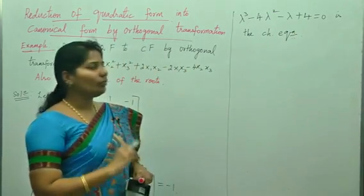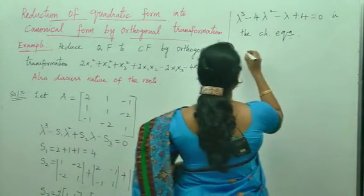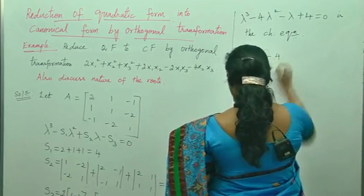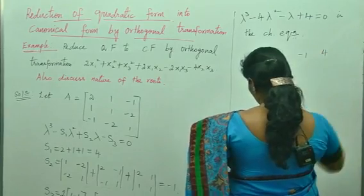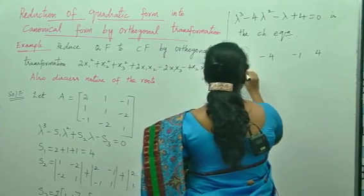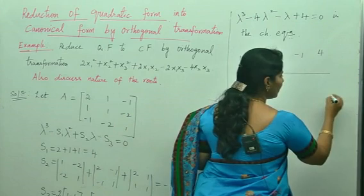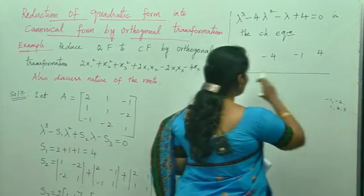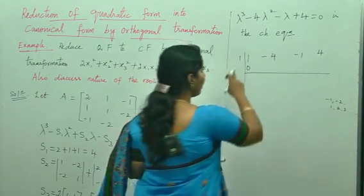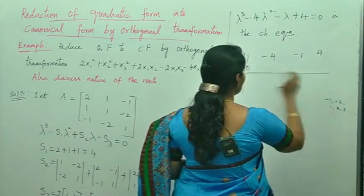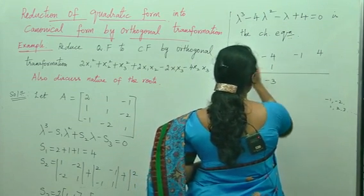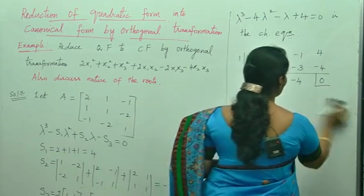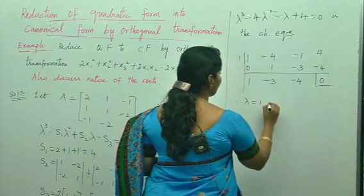Using this characteristic equation, we find the eigenvalues by synthetic division. We try lambda equals 1: carrying out the division with coefficients 1, minus 4, minus 1, 4, we get 1, minus 3, minus 4, and remainder 0. Therefore, lambda equals 1 is one of the roots.